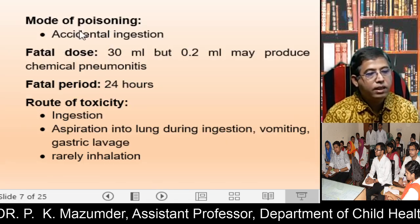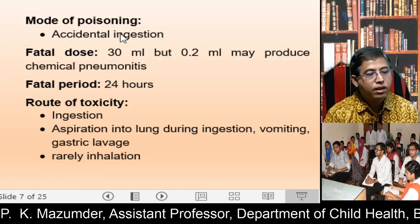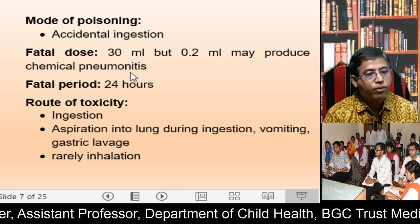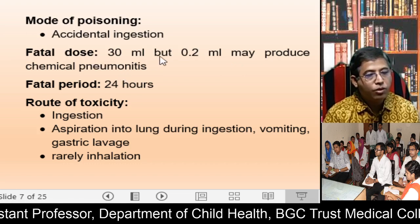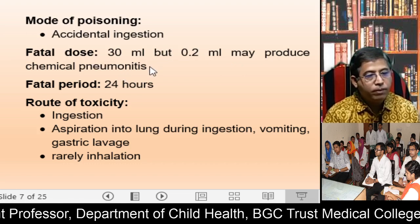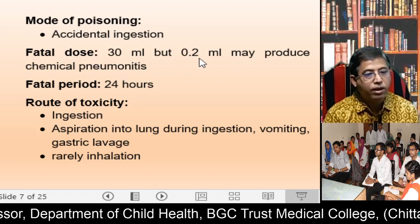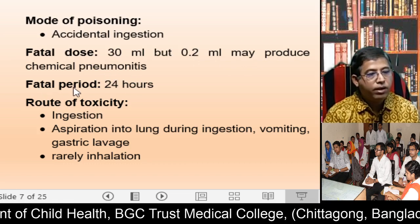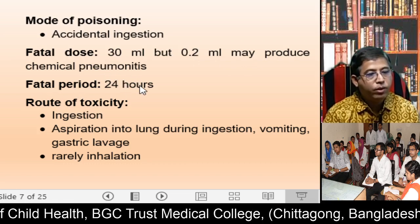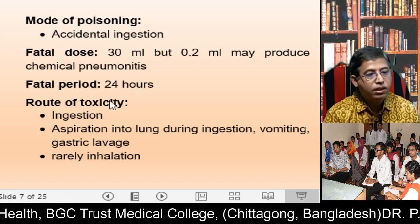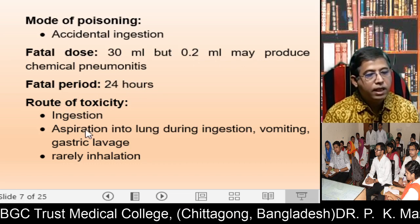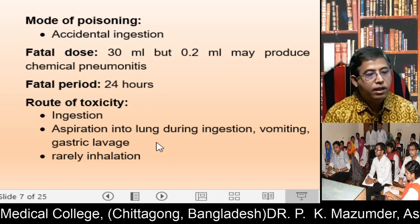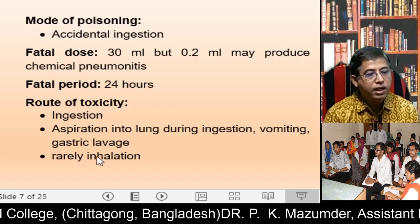Mode of poisoning is accidental. The fatal dose is 30 ml, but only 0.2 ml may produce chemical pneumonitis. The fatal period is 24 hours. Routes of toxicity include: ingestion, aspiration into the lung during ingestion, vomiting and gastric lavage, and rarely inhalation.